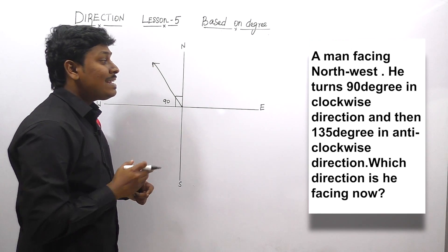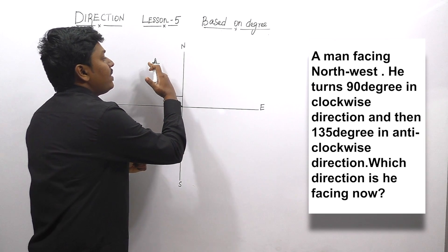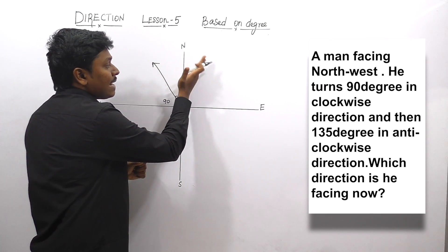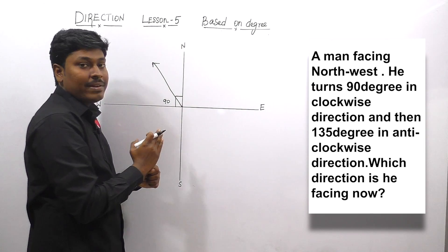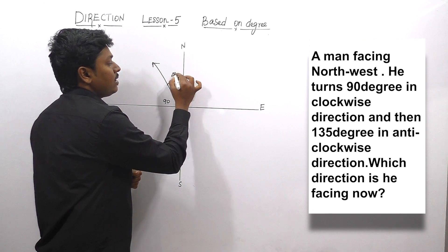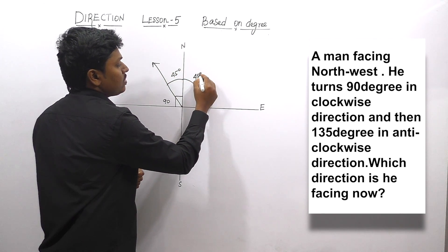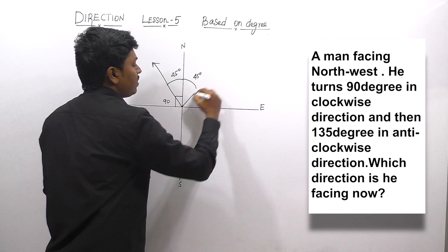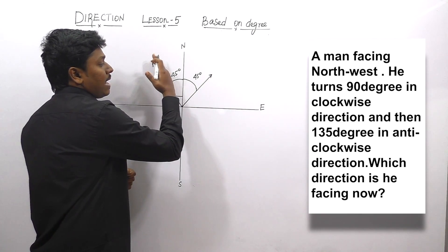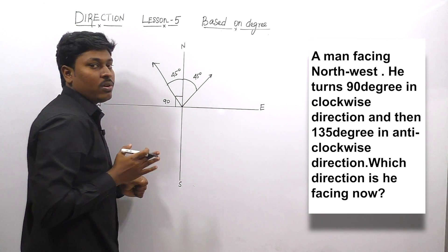Point number 2: it turns 90° in clockwise direction. From here, we know this is clockwise direction. A person is turning 90° in clockwise direction — this will be 45° and again a small distance will be 45°. So I can surely say that now the man will be facing in this direction. From here, the man is facing 90° in clockwise direction.